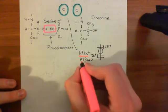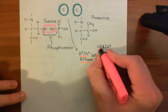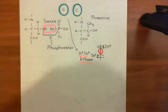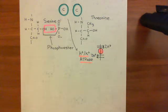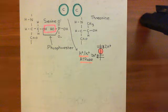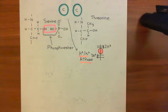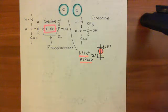This proton-potassium ATPase is the entire driving force for the secretion of hydrochloric acid. What turns this protein on is the phosphorylation it receives from the catalytic subunits of protein kinase A. This is how histamine directly regulates hydrochloric acid secretion — by regulating proton-potassium ATPase activity at the apical surface of parietal cells, and therefore how much hydrochloric acid is secreted.